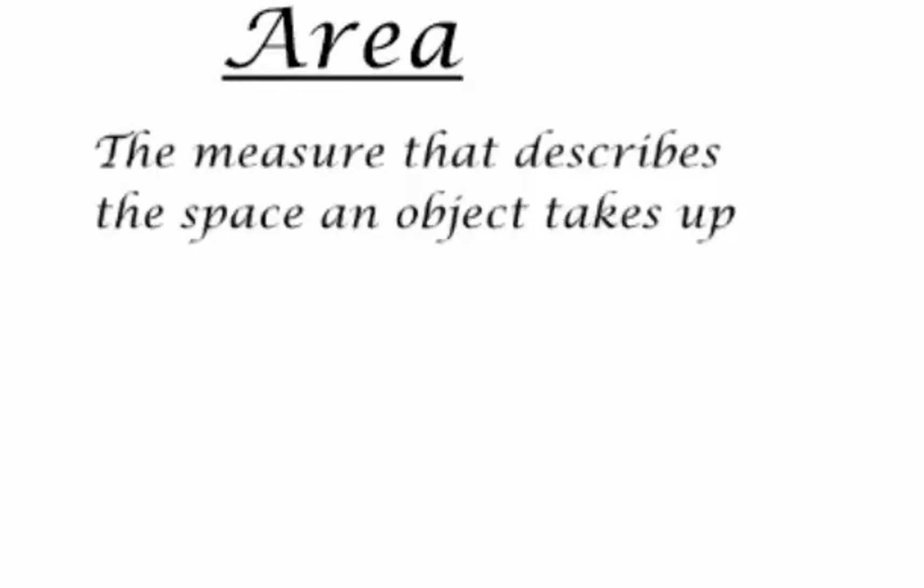Area, on the other hand, is the measure that describes the space an object takes up. Everything inside of an object. The amount of space that's in between those sides of that polygon. And we measure it in square units, like square inches.